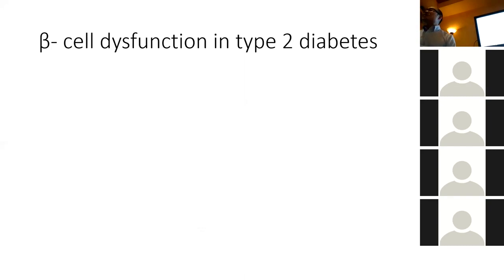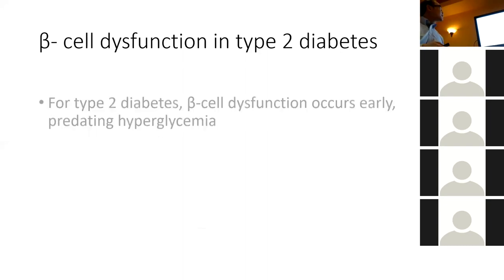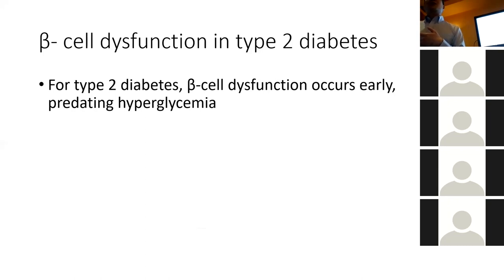Beta cell dysfunction in type 2 diabetes is very different. With type 1, it's usually quite sudden — the immune system attacks the beta cells and they get destroyed pretty quickly. With type 2, it's quite different. Beta cell dysfunction can occur very early; some studies say it can occur up to a decade before actual diagnosis. It's usually a slow, progressive disease.